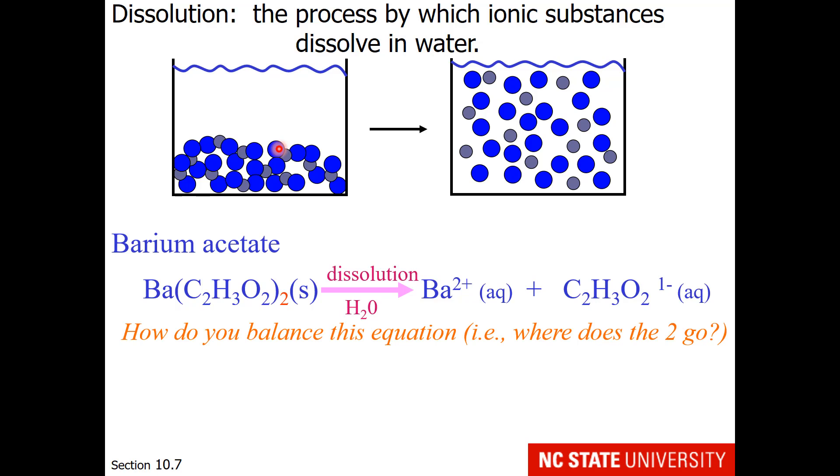But how do you balance the equation? Where does the subscripted 2 on the barium acetate belong? It becomes the coefficient. So subscripts become coefficients.